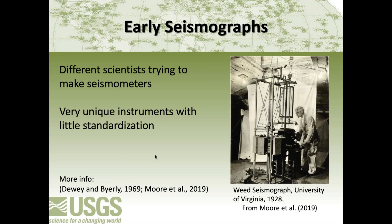Moving on to more early seismographs, I'm showing a picture of Arthur J. Weed on his Weed seismograph from the University of Virginia, around 1928 — a torsional instrument. There's a lot of different early instruments with little standardization, but they're actually quite impressive if you go back and look at the different ways people were trying to record ground motion.